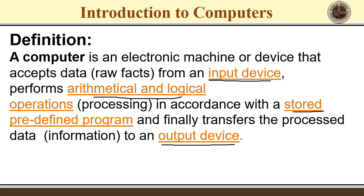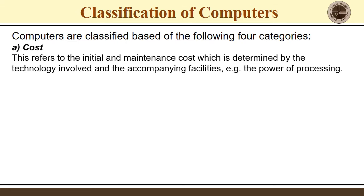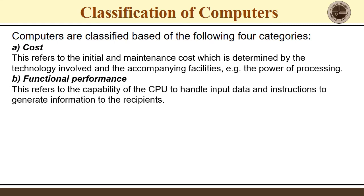Let's look at the classification of computers. Basically, computers are classified into four different categories. The first is based on cost — this is the initial and maintenance cost, which is determined by the technology involved and the accompanying facilities, such as the processing power.